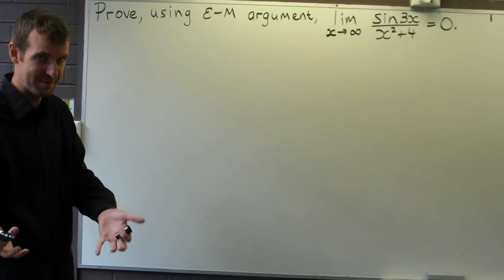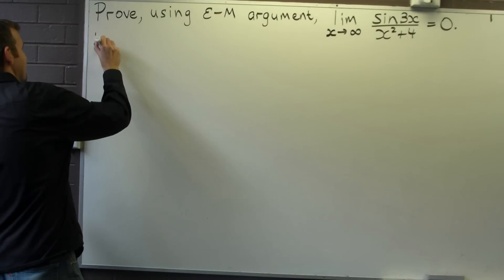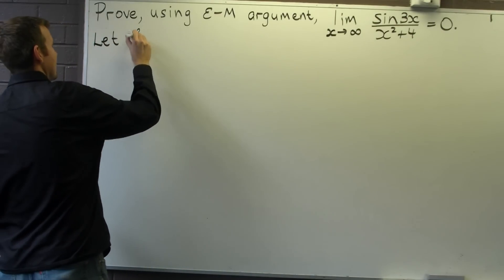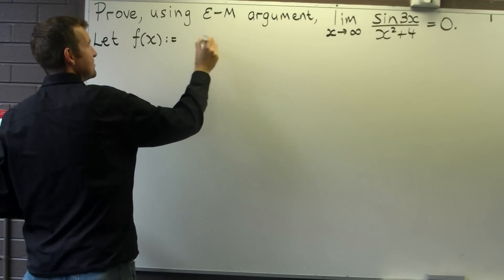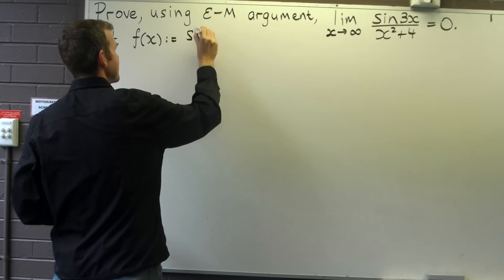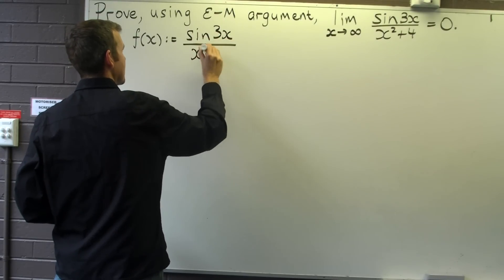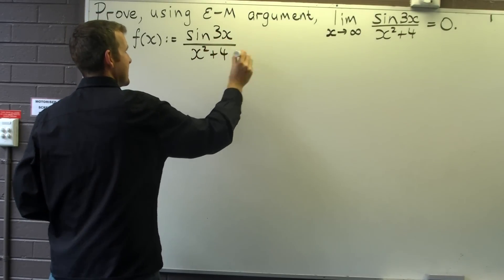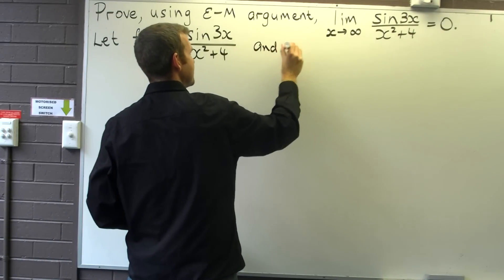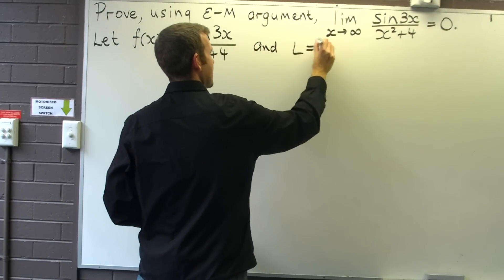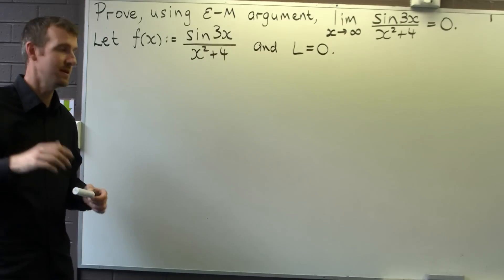First of all, some notation. I'm going to let f(x) be defined by sin(3x)/(x²+4), and I'm going to let L equal zero. Easy right, L represents our limit.